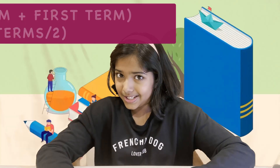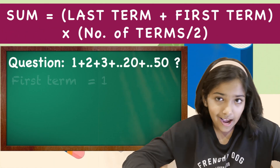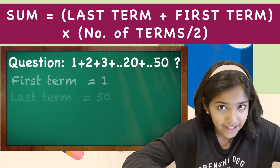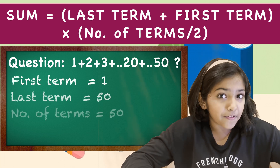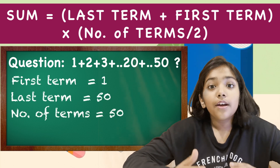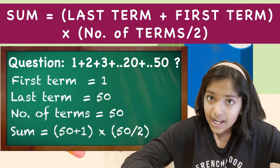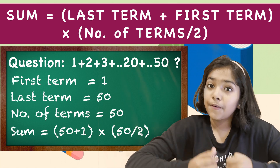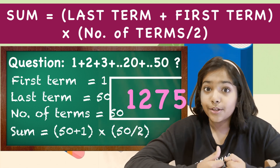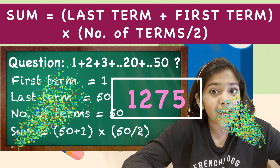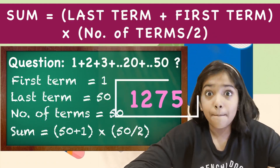What is 1 plus 2 plus 3 all the way to 50? That looks super complicated. But let's see if the smart way works. The first term is 1, the last term is 50, and the number of terms is 50. So, 50 plus 1, multiplied by 50, divided by 2 is equal to 1275. Wow! That was amazing!